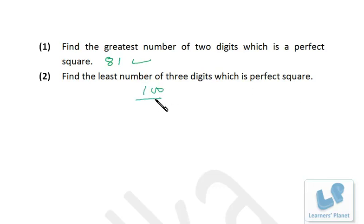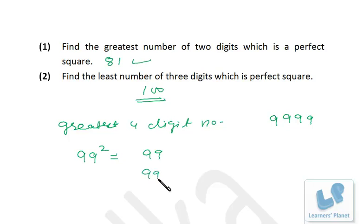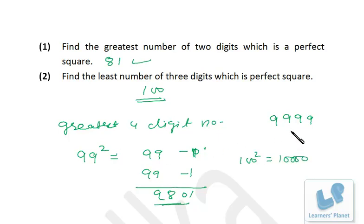Now suppose you have to find the greatest four-digit perfect square. The greatest four-digit number is 9999, which is not a perfect square. So we find 99² = 9801, and 100² = 10000 which is five digits. Therefore the greatest four-digit perfect square is 99² = 9801.